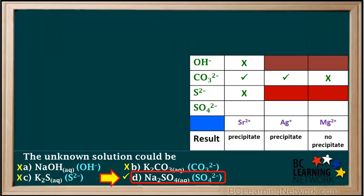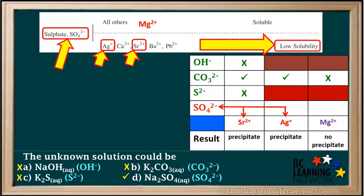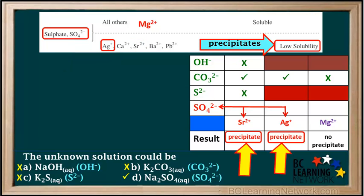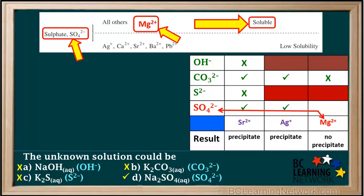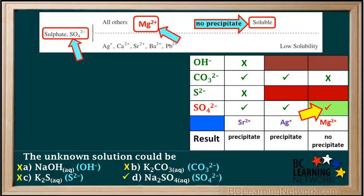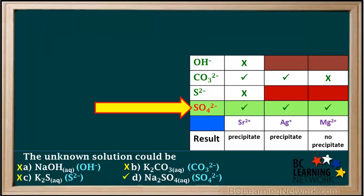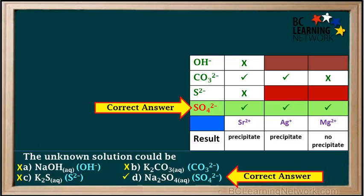By process of elimination, answer D must be correct — the unknown solution contains the sulfate ion. We check strontium and silver with sulfate: both have low solubility, so precipitates are predicted, and the results are consistent. For magnesium sulfate, magnesium is not in the bottom section, so magnesium sulfate is soluble — no precipitate predicted — and our results confirm no precipitate with sulfate. Sulfate has a check mark for each of the reagents, confirming it is the correct answer.